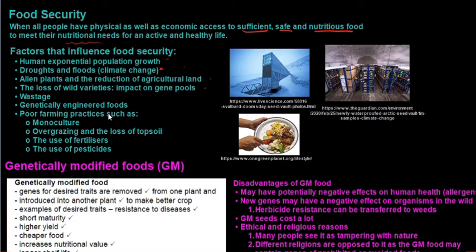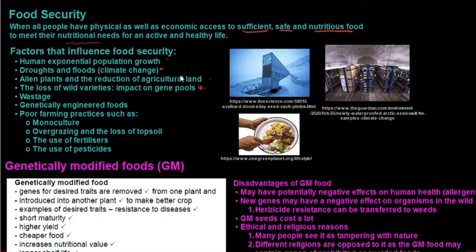Poor farming practices such as monoculture, overgrazing, use of fertilizers, and pesticides also affect food security. Regarding loss of wild varieties: most food crops and livestock are products of selective breeding with wild varieties. For example, cabbage and lettuce all came from a wild mustard plant. This process improved crops, accelerated growth, and made livestock and crops more resistant to diseases and changing climatic conditions.